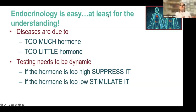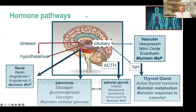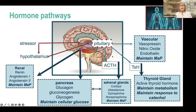Always remember that endocrinology is about diseases that have too much hormone or too little hormone, and testing has to be very dynamic — if the hormone is too high, suppress it; if too low, stimulate it. Those are basic strategies when thinking about endocrine abnormalities in our critical patients. Today we're going to talk about ACTH — adrenocorticotropin stimulating hormone — the pituitary hormone that stimulates your adrenal glands.